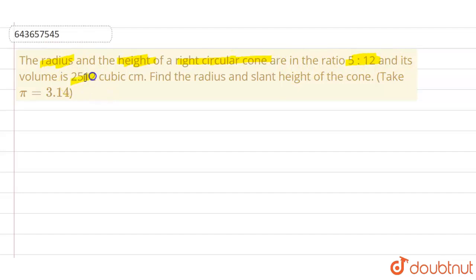volume is 2512 cubic centimeter. Find the radius and the slant height of the cone. Take pi as 3.14.